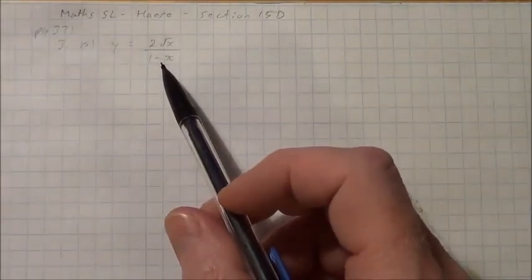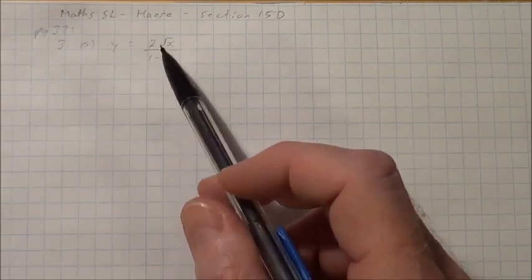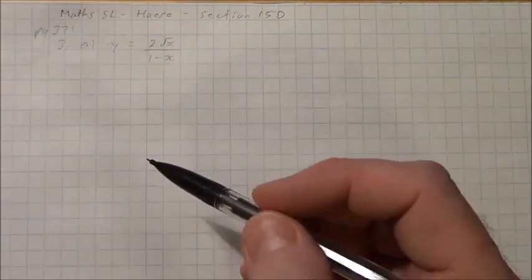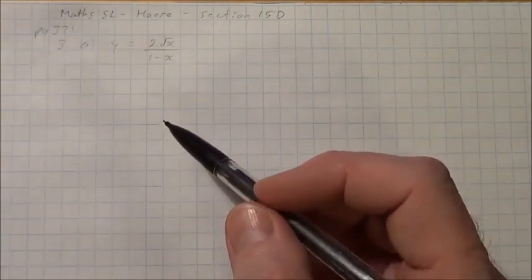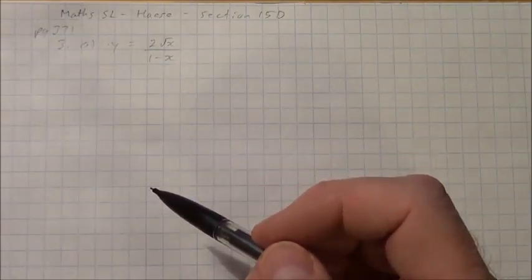Section 15d, question number 3, page 371. This question asks us to find the derivative, the gradient function for this function here, and then show that the derivative equals what's given in the book. Hopefully if I do this correctly, it will turn out as required.